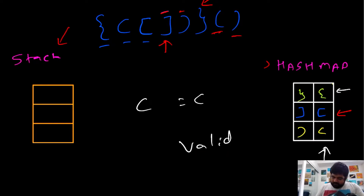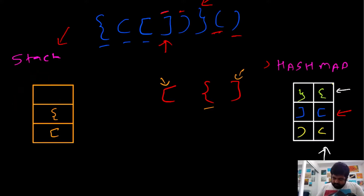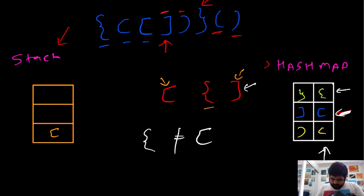Now let's take an example where the string is not valid. Suppose we have two opening brackets and one closing bracket. We add the first opening bracket to the stack, then add the second opening bracket. When we encounter the closing bracket, we pop a value — it's a curly opening bracket. But the corresponding value in the hash map for that closing bracket is a round bracket. These two are not the same, so the moment we identify that they are not the same, we can immediately return that this string is invalid and the parentheses are not in the correct order.